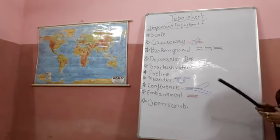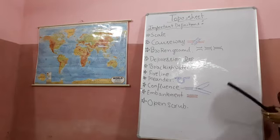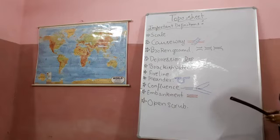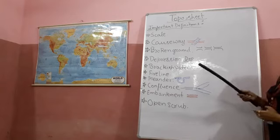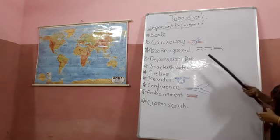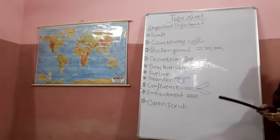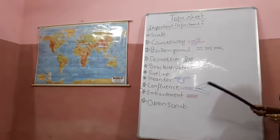The next type is the Representative Fraction, also called RF — for example, 1:50,000. The third one is the linear or graphic scale. You do not need to explain these in detail; you will only write the name and give their examples.